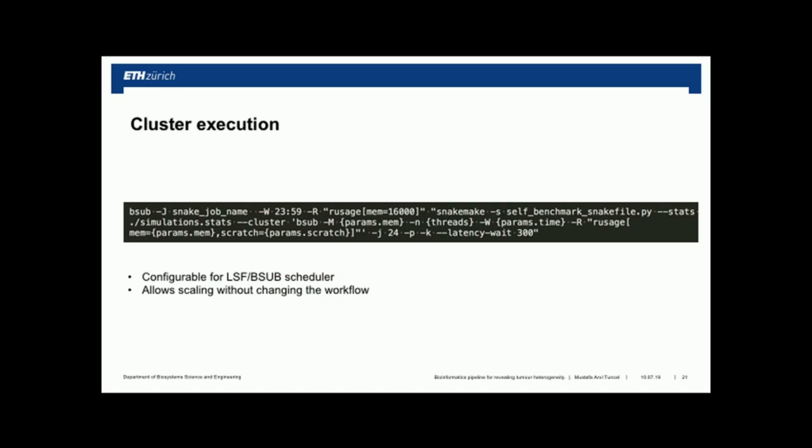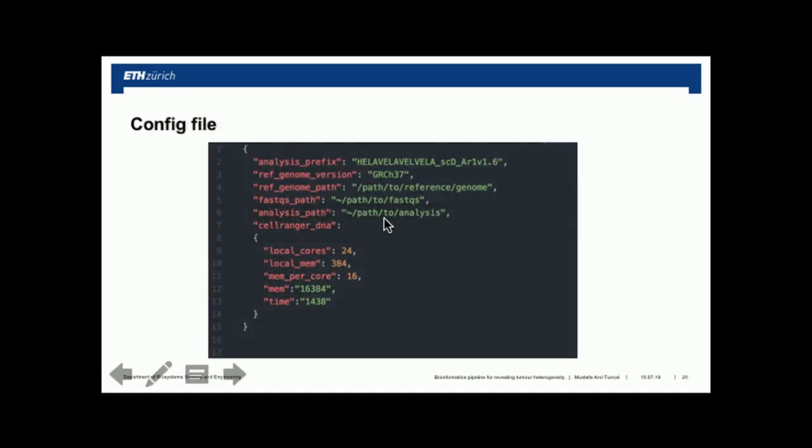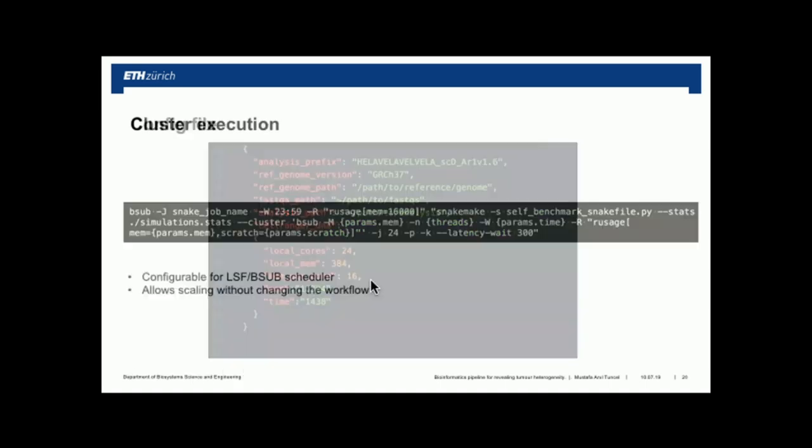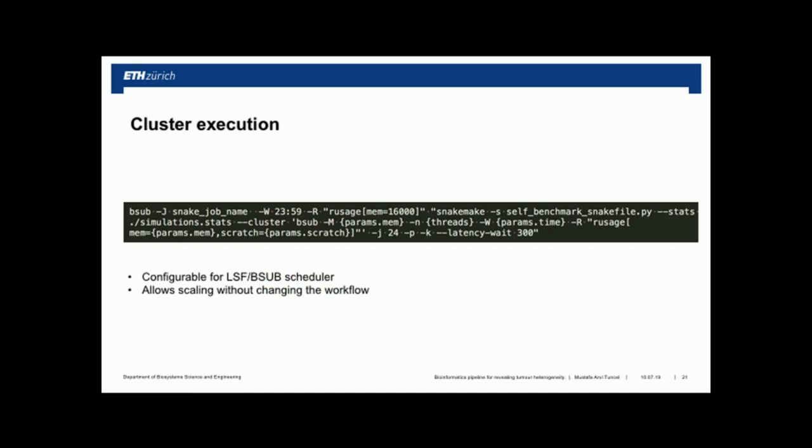Snakemake is automatically configurable with the LSF scheduler. In the config file, given that you define the resources for each job — this much memory for this job, that much memory for the second job — Snakemake automatically creates sub-jobs on the cluster. That way you can specify how much memory, runtime, or disk space you want to give to each job.